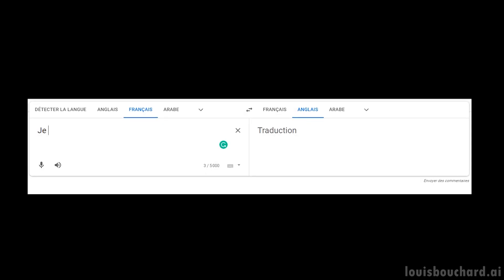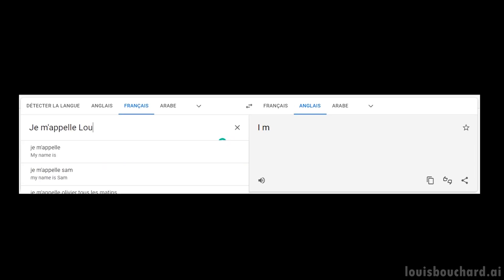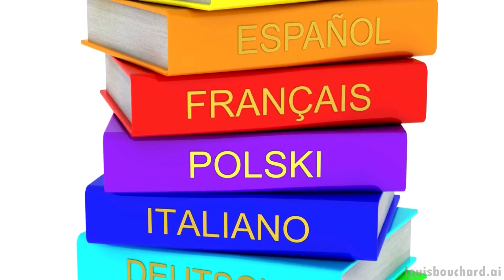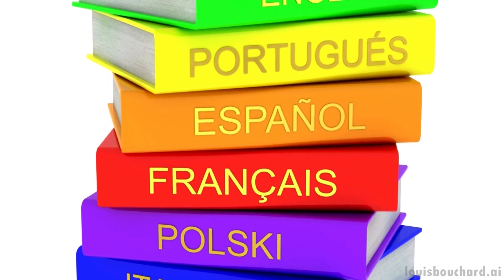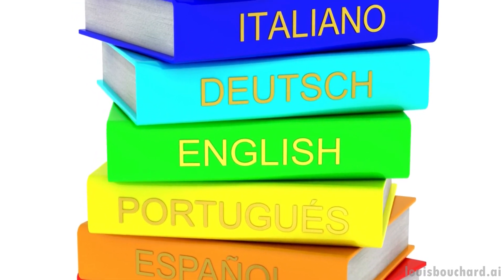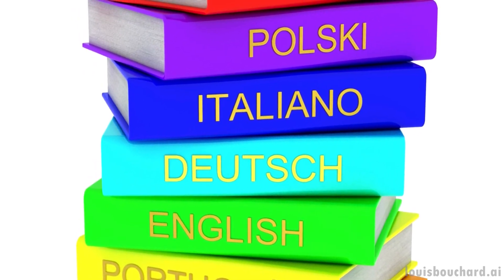We typically train such a model to perform translation from one language to the other, in a single direction, not between 200 languages all at once, requiring a new model each time we want to add a new language. So how did Meta scale one model to hundreds of languages?